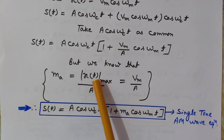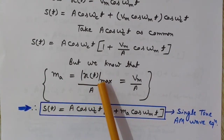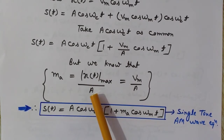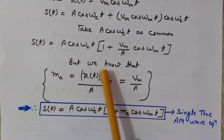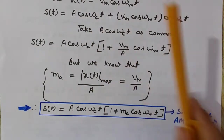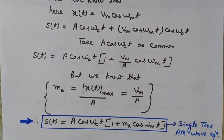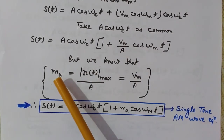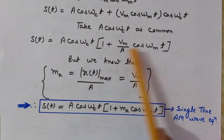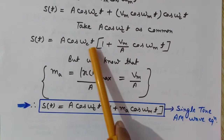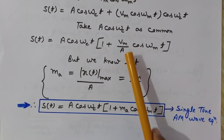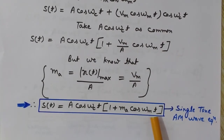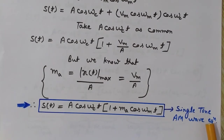The modulation index for the amplitude modulated wave, denoted ma, is given by xt_max divided by A, where xt_max is the maximum amplitude of the modulating signal and A is the amplitude of the carrier wave. Since xt_max = Vm, the expression Vm/A is nothing but ma. So we can write s(t) = A·cos(ωc·t)·[1 + ma·cos(ωm·t)].